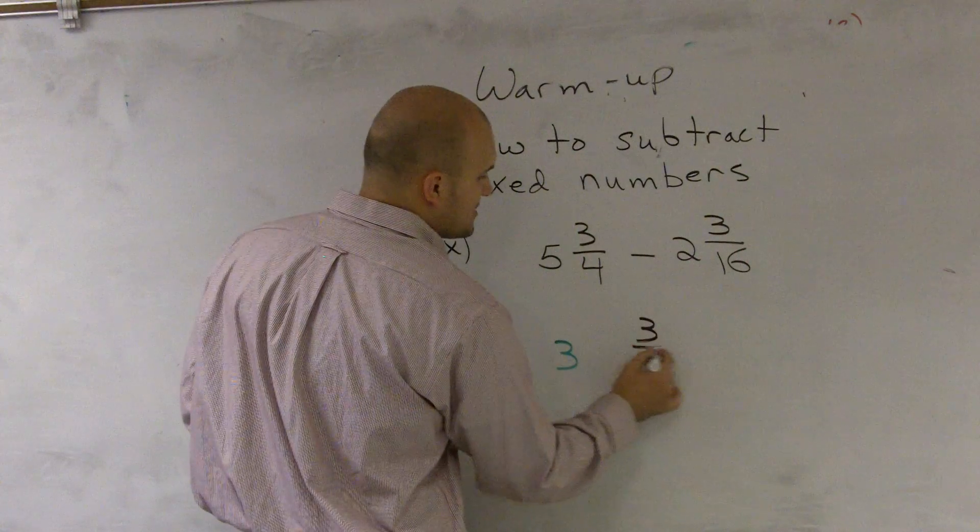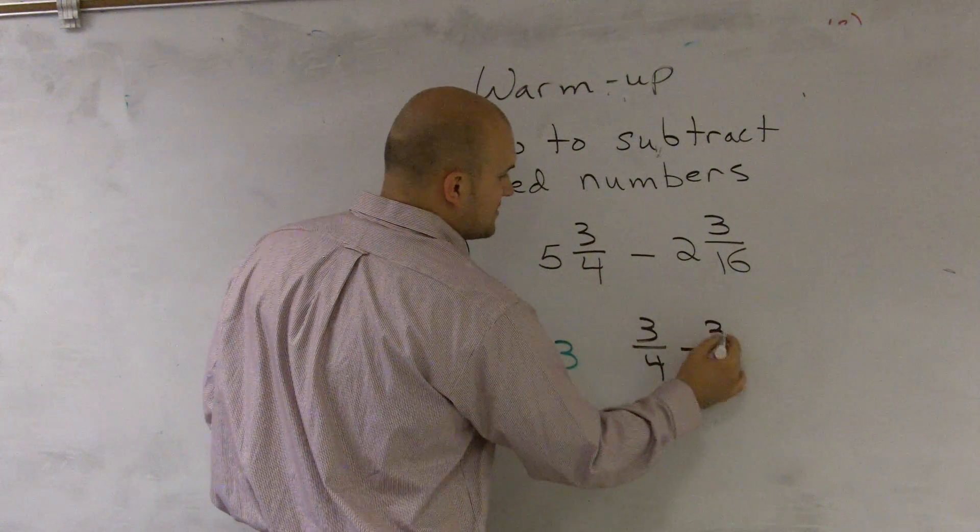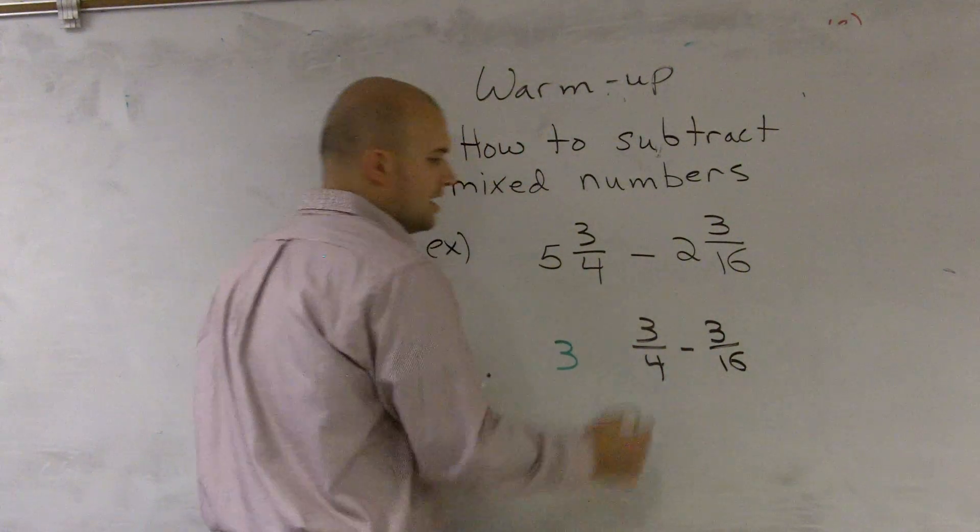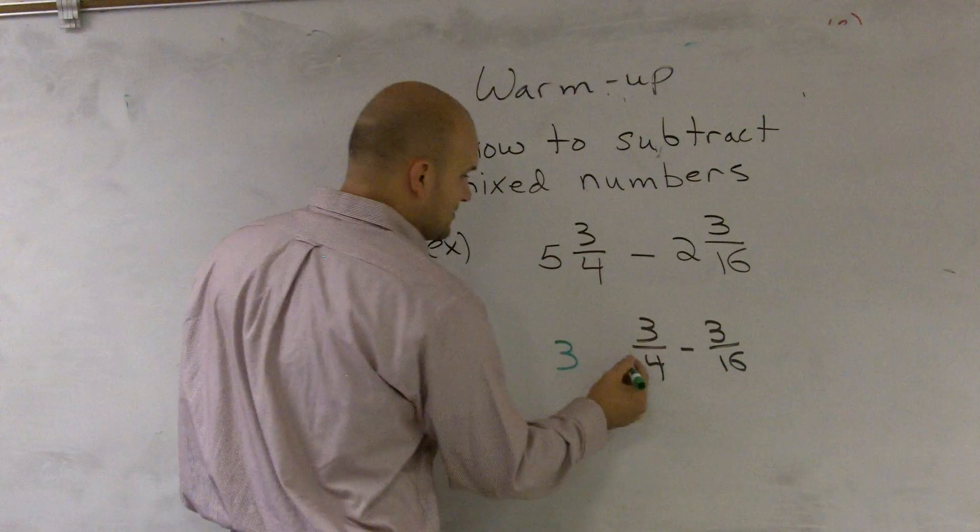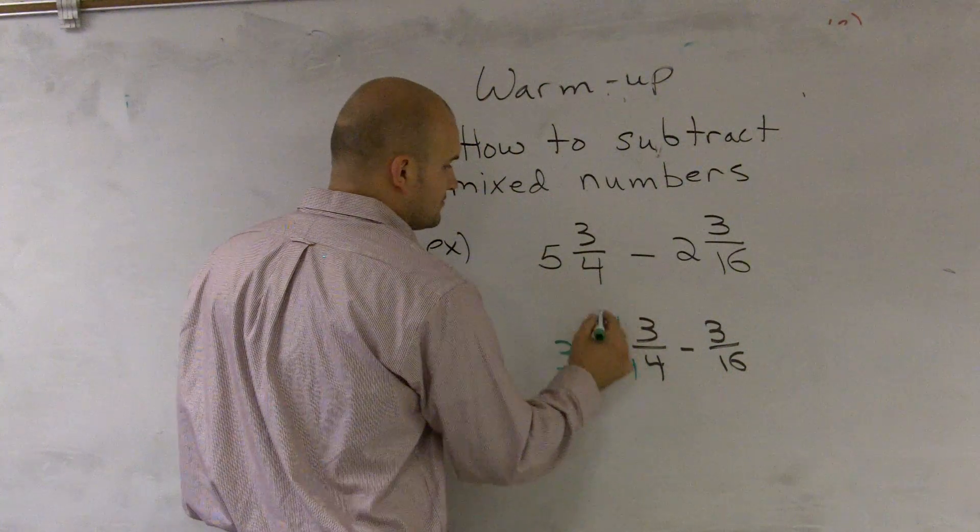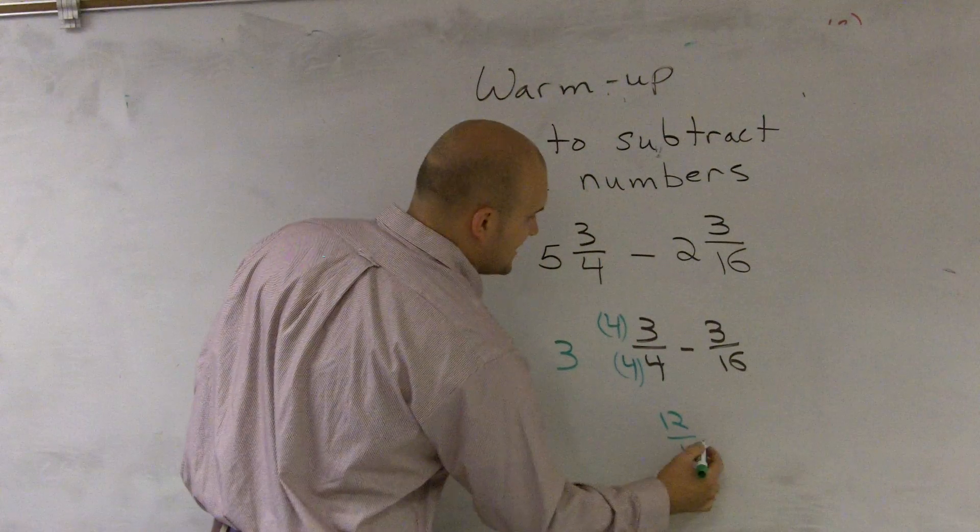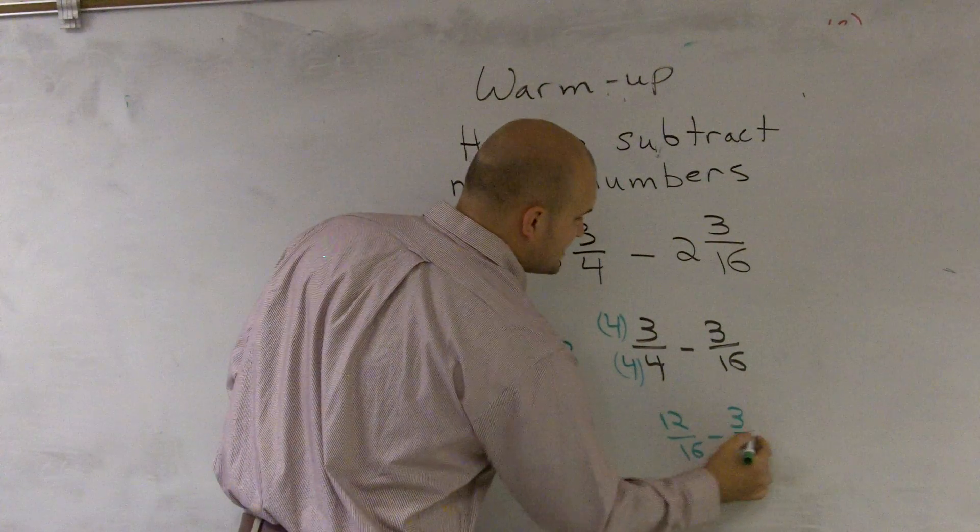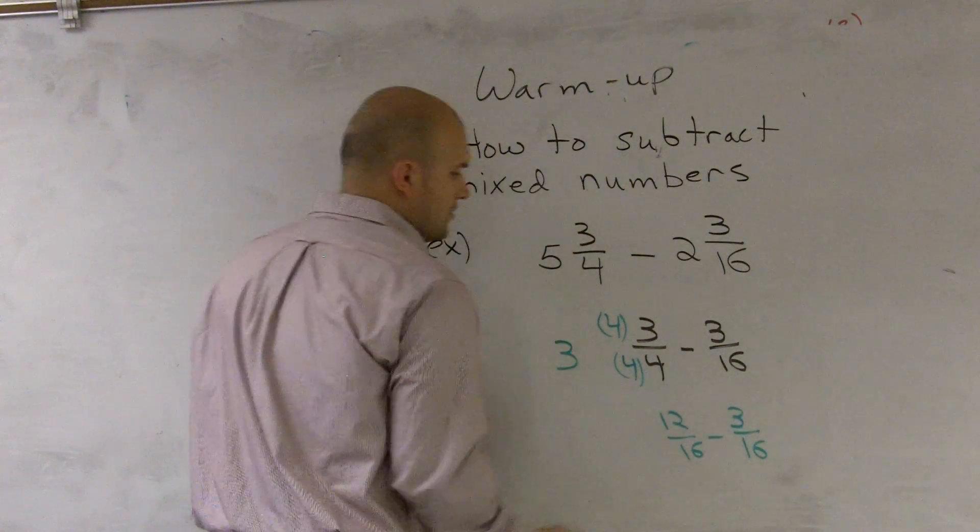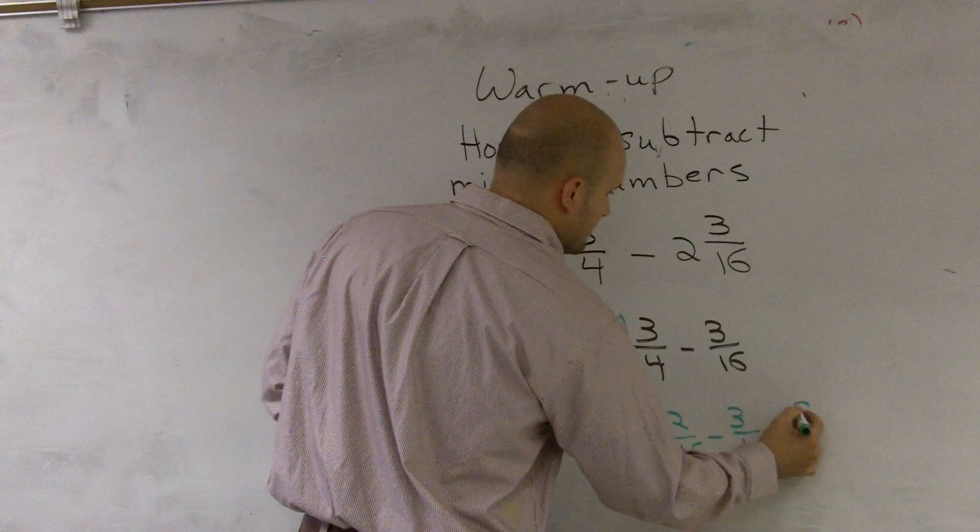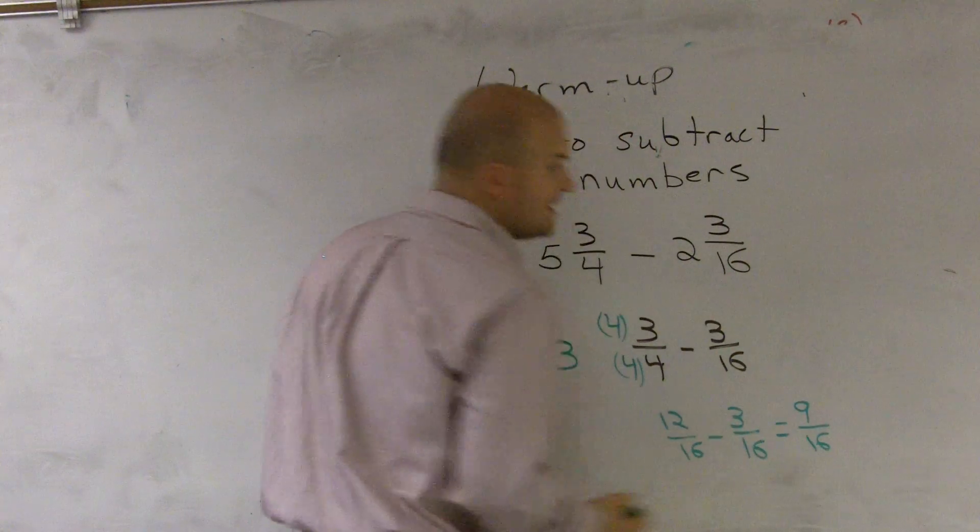So I do 3 fourths minus 3 sixteenths. Again, these denominators are not the same, so I need to multiply. What I get is 12 sixteenths minus 3 sixteenths, which becomes 9 sixteenths.